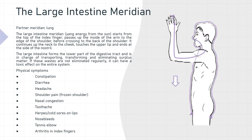The large intestine meridian — yang energy from the sun — starts from the top of the index finger, passes up the inside of the arm to the edge of the shoulder before crossing to the back of the shoulder. It continues up the neck to the cheek, touches the upper lip, and ends at the side of the nostril. The partner meridian for the large intestine is the lung. The large intestine forms the lower part of the digestive tract and is in charge of transporting, transforming, and eliminating surplus matter. If these wastes are not eliminated regularly, it can have a toxic effect on the entire system.